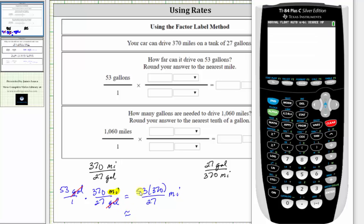To form the calculation all at once, we need parentheses around the numerator. So we have open parenthesis 53 times 370, closed parenthesis, divided by 27. Because we have a two in the tenths place value, we round down to 726 miles.